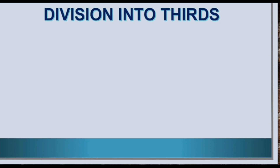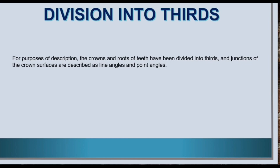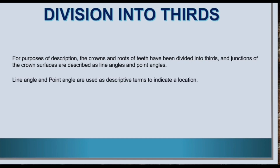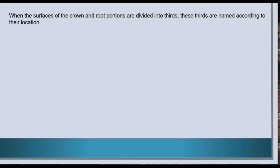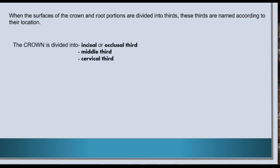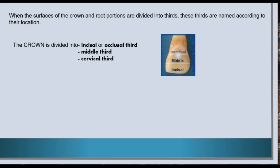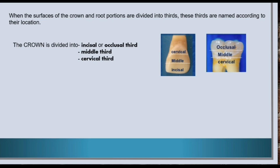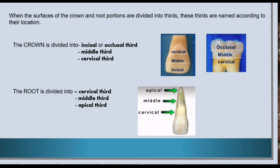Now let us know how a tooth is divided into thirds. For the purposes of description, the crowns and roots of teeth have been divided into thirds, and junctions of the crown surfaces are described as line angles and point angles. Line angle and point angle are used as descriptive terms to indicate a location. When the surfaces of the crown and root portions are divided into thirds, these thirds are named according to their location. The crown is divided into incisal or occlusal third, middle third, and cervical third. The root is divided into cervical third, middle third, and apical third.